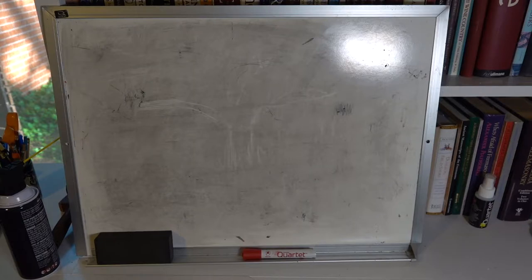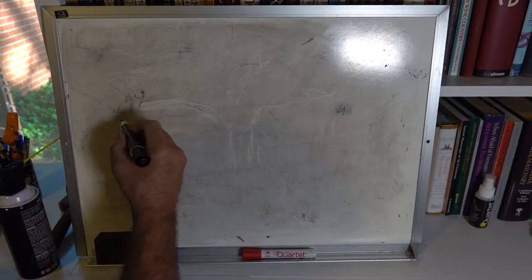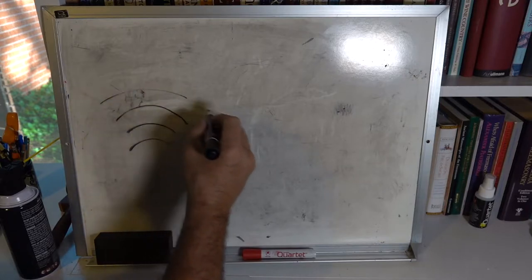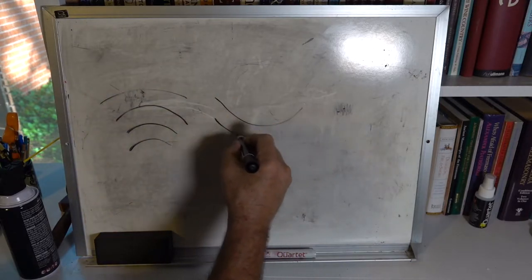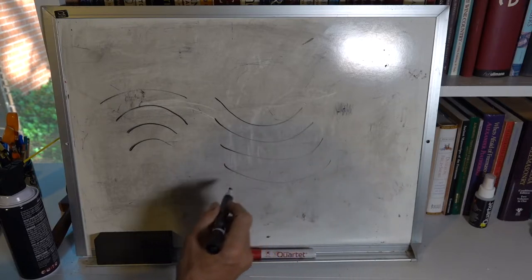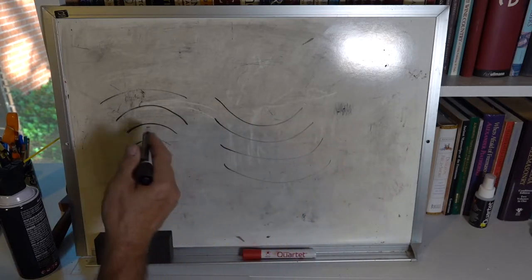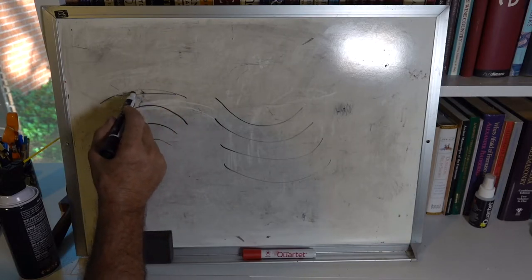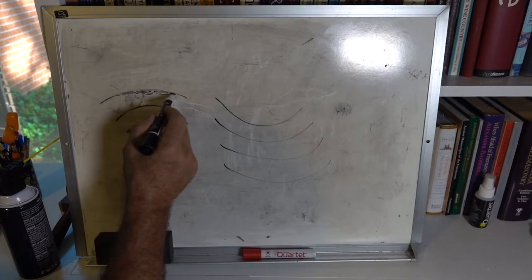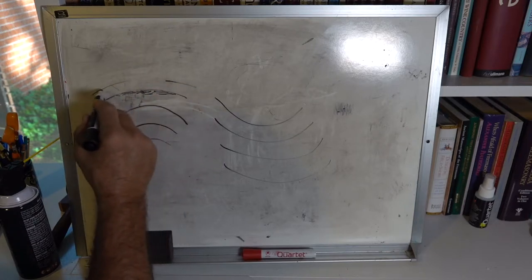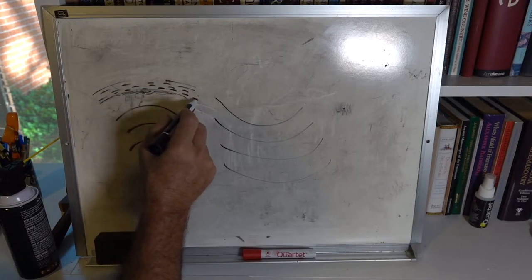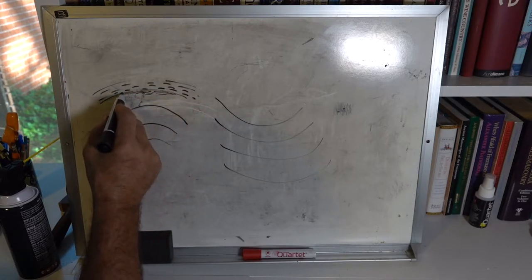The next term is anticline and syncline. Anticlines are shaped like an arch, and synclines are the opposite — a downward fold. They're both folds: a syncline is a down-fold and an anticline is an up-fold. Oil can accumulate in an anticline as long as it's below some sort of seal. Seals are usually shales, which tend to have low permeability and low porosity, so they trap fluids in the subsurface.